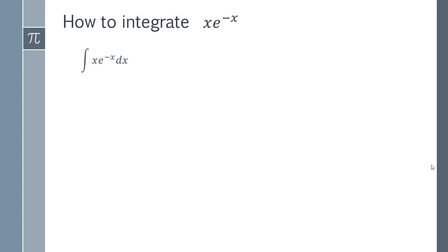You've got one function which is x and you're multiplying that by another function e to the minus x, and when you have two functions being multiplied together your general strategy is going to be to use integration by parts.